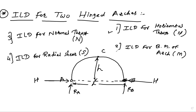Then third, we have to draw ILD for normal thrust. Then fourth, we have to draw ILD for radial shear, that is generated by ES. So in case of ILD for two-hinge arch, we have to draw the ILD for: horizontal thrust EH, bending moment of arch EM at any section, normal thrust N, and radial shear.